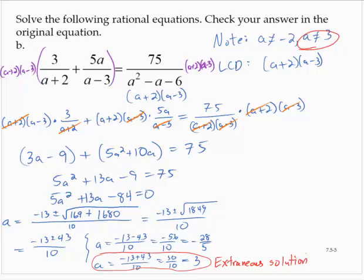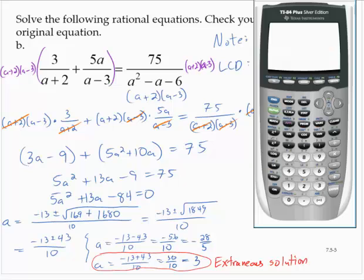And here I think I'm going to go ahead and use a calculator, because I don't feel like doing all the arithmetic in my head. So let me bring up my calculator. And I'll use my y equals screen. I'll put the left-hand side in my y1. So that would be 3 divided by quantity x plus 2 plus 5x in quantity divided by x minus 3 in quantity.